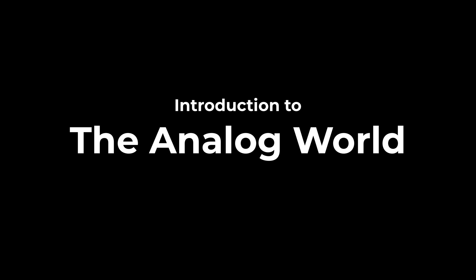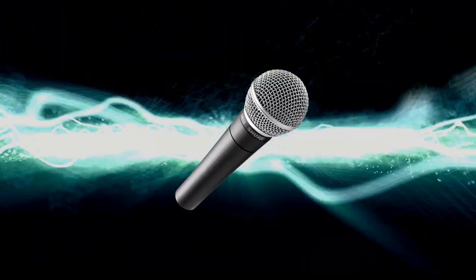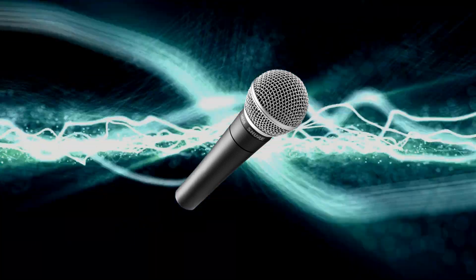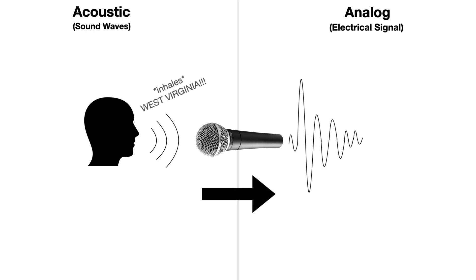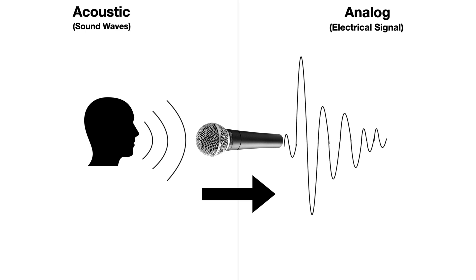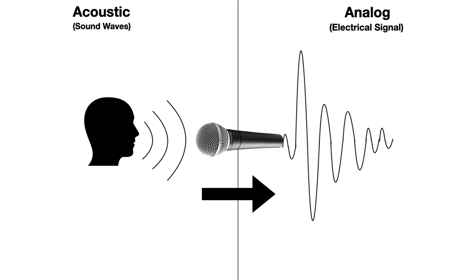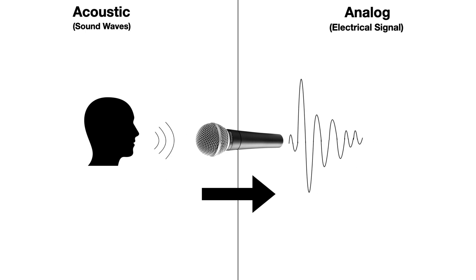The analog world is ruled by electricity, and the typical gate to this world is the microphone. As the vocalist sings into the microphone, they produce sound waves that are picked up by the microphone, which converts them into an electrical signal that mirrors the sound produced by the vocalist. As the vocalist sings louder, the signal increases — a louder signal. If the sound of the vocalist is quiet, we get a lower signal, which translates to a quieter signal.